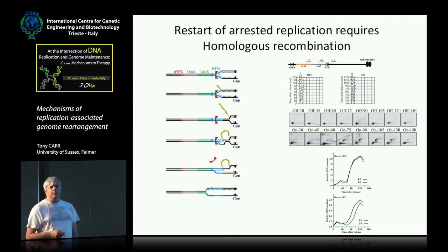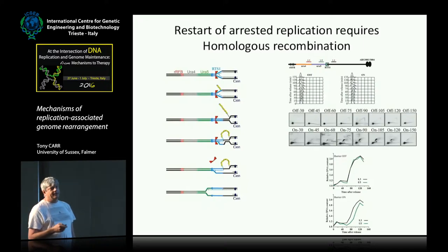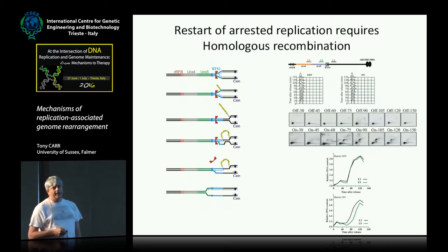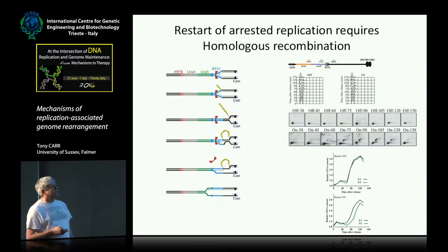We've been able to time how quickly cells undergo this event — it takes about 15 to 20 minutes. In a normal situation this piece of DNA and another piece will be replicated at the same time in a synchronous culture. But when the barrier is active, it takes about 15 to 20 minutes for the piece of DNA marked U5 to be replicated in comparison to the timing of the piece marked L3.